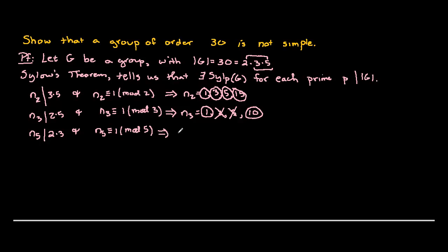Lastly, N₅ must divide 6. The divisors of 6 are 1, 2, 3, and 6. N₅ has the added restriction that it must be congruent to 1 mod 5. The only integers in our list satisfying that are 1 and 6. So N₅ is either 1 or 6.